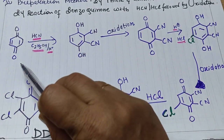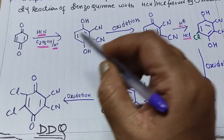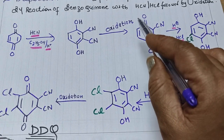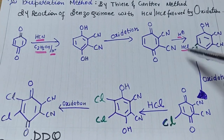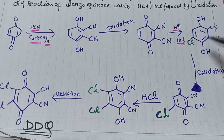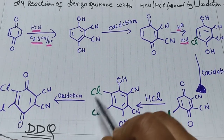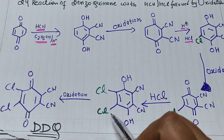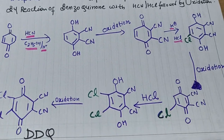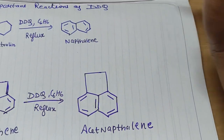This gives the final structure of DDQ. To summarize: we start with benzoquinone, add two cyanide groups with OH groups, then oxidize to convert OH to O. Next, one chlorine group is added and OH groups convert to O groups. Then treating again with SCl adds two chlorine molecules at the 5th and 6th positions, and finally oxidation gives the DDQ structure.